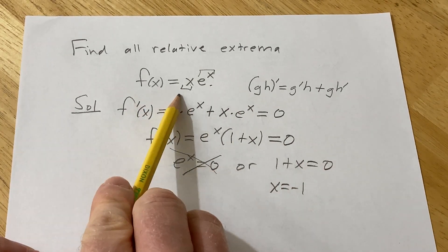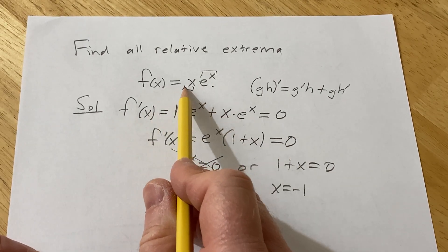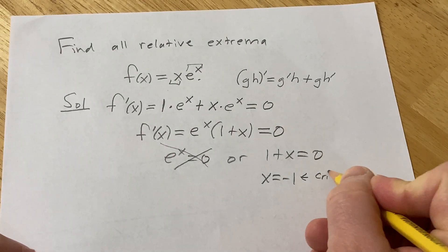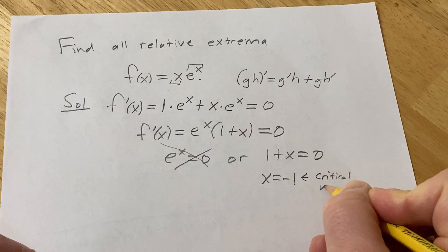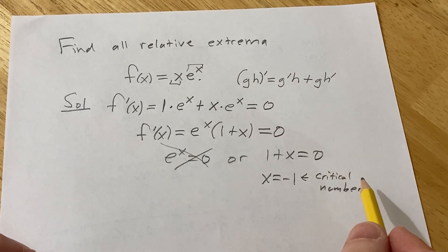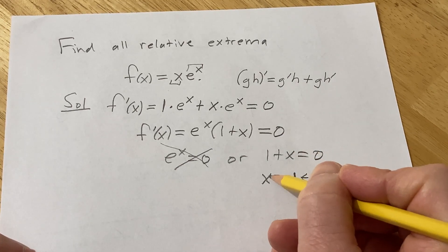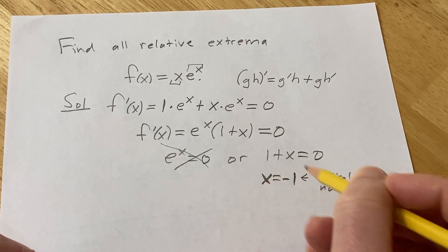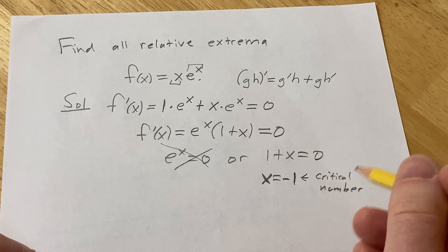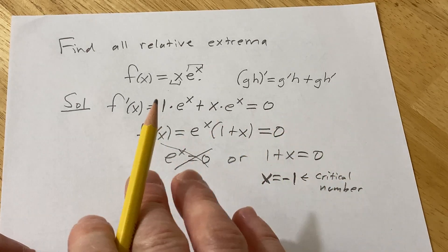x = -1 is in the domain of the original function — there's no division by zero, no negative numbers inside square roots. So this is our critical number. If we are going to have a relative maximum or minimum it's going to occur at a critical number, because whenever you have a relative max or min at a particular x value, that x value is a critical number. However, you can have a critical number with no max or min, so we have to take this a step further.